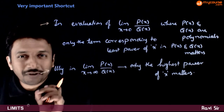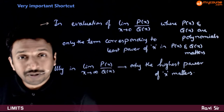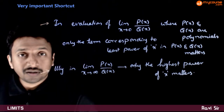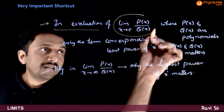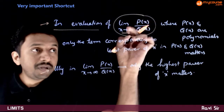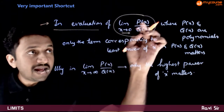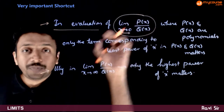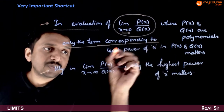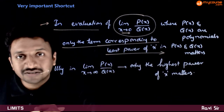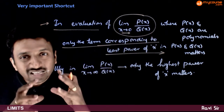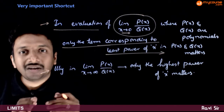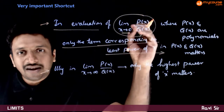In this video, we are going to learn a very important shortcut which will be useful in solving a lot of problems and limits very easily. There are two statements. The first statement is: in evaluation of limit x tends to 0 of some polynomial p(x) by some polynomial q(x), only the terms corresponding to the least power of x in p(x) and q(x) matter. You can neglect all the other powers and just consider the least powers to find the limit.